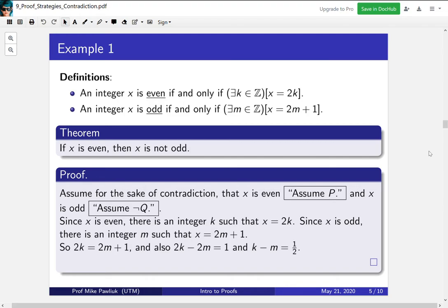So setting them equal, we have that 2k = 2m + 1. Therefore, 2k - 2m = 1, so k - m = 1/2. Now what's wrong with this situation?